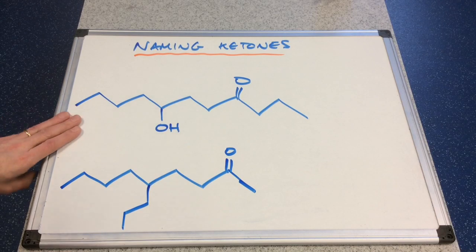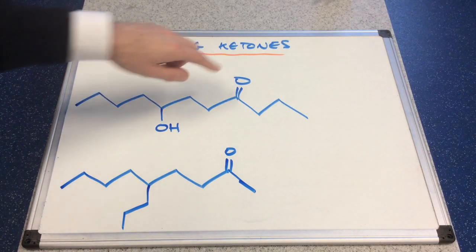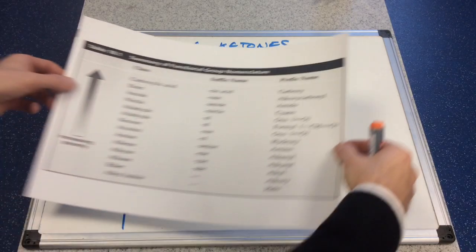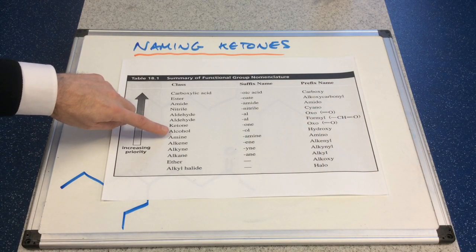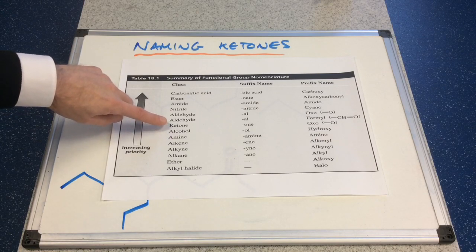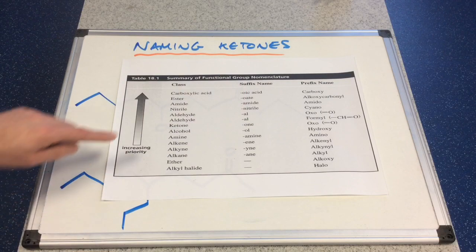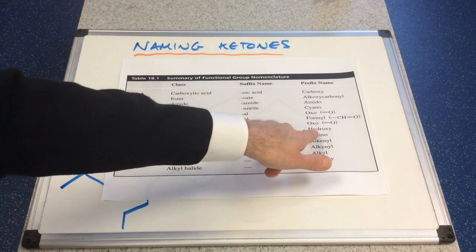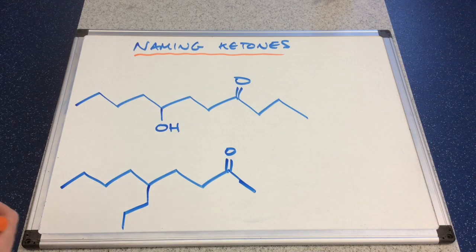The first one — the problem we've got here is we've got two functional groups: an OH functional group and the C double bond O functional group. So we need to decide which takes priority, which will help us decide which suffix and which prefix to use. The ketone is higher priority than the alcohol, so we use the ketone's suffix — the name will end in 'one'. For the alcohol, we use the prefix form, which is 'hydroxy'.